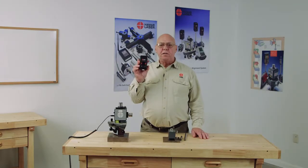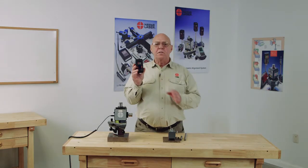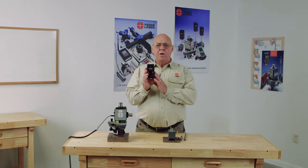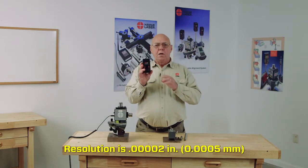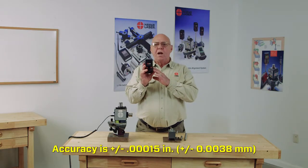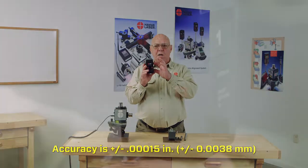This is the A1519 target. This is the heart of the system. This is where all the information comes from. This target has a resolution of 20 millionths. It has an accuracy of one and a half tenths over the range of the cell.